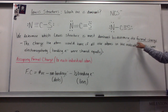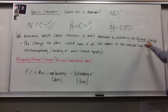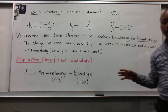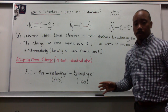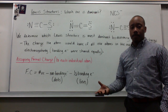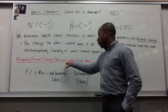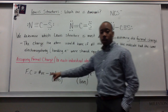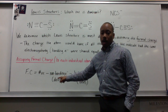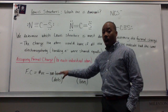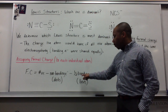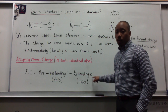We determine this by determining something called the formal charge. The formal charge is the charge the atom would have if all the atoms in the molecule had the same electronegativity values. This means that all the bonding electrons are being shared equally. We assign formal charges to each individual atom using this formula: formal charge equals the number of valence electrons, minus the number of non-bonding electrons (the dots), minus half of your bonding electrons (the lines).